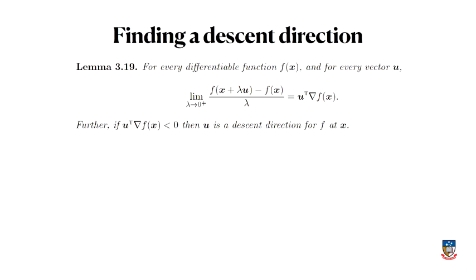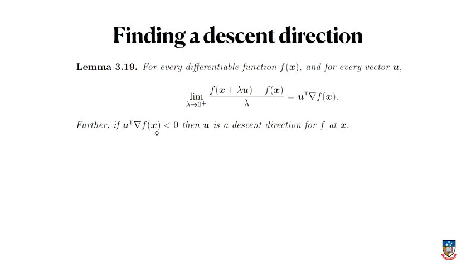How do I find what u is? I've got a criterion for checking whether a given direction is a descent direction. Can you think of a way to choose u that guarantees u^T · ∇f is negative? If you choose u to be the negative of the gradient — negative ∇f(x) — then that's definitely always going to be negative, because u^T · ∇f(x) becomes the negative norm of the gradient squared, which is always positive, with a minus sign in front.